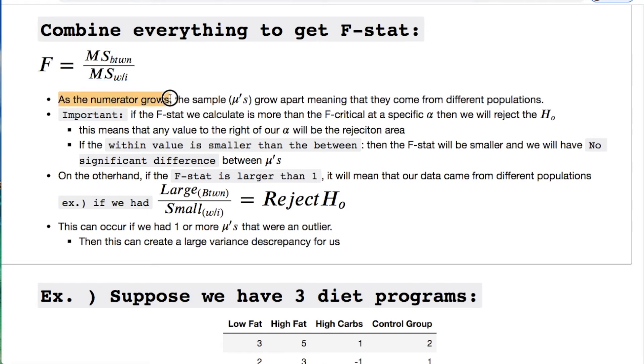We have to combine everything to give to f stat. As the numerator grows like I said before, the sample means grow apart. Meaning that they come from different populations. Important right here. I'm going to show two ways you can do a comparison for these tests so you're aware of it.